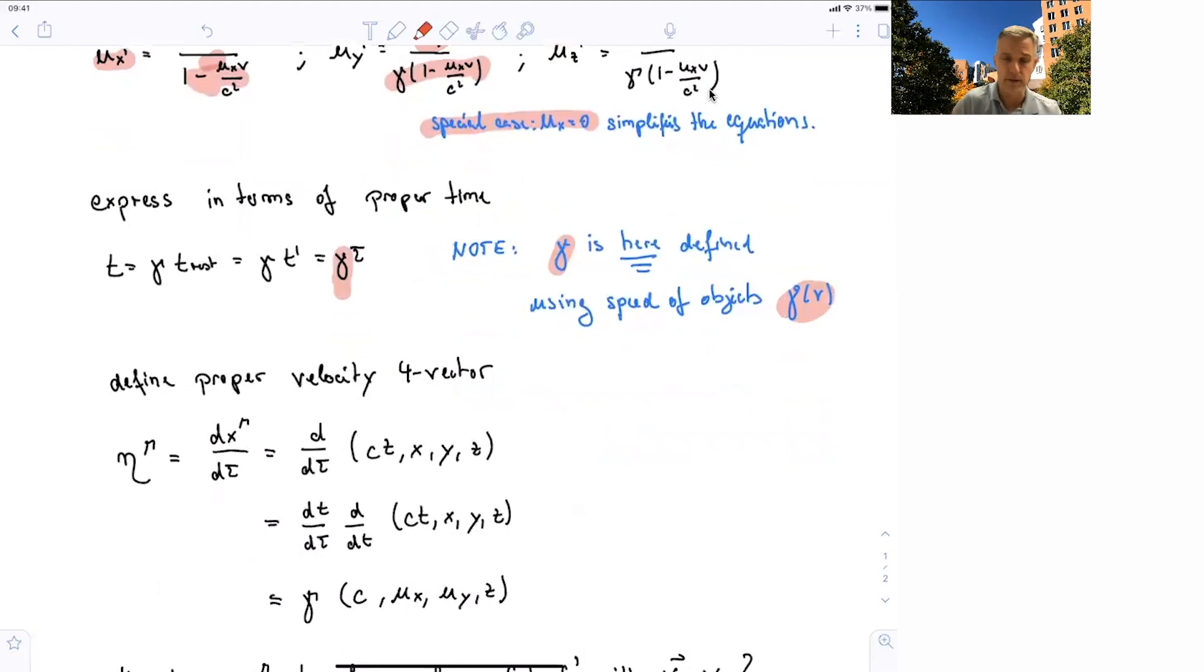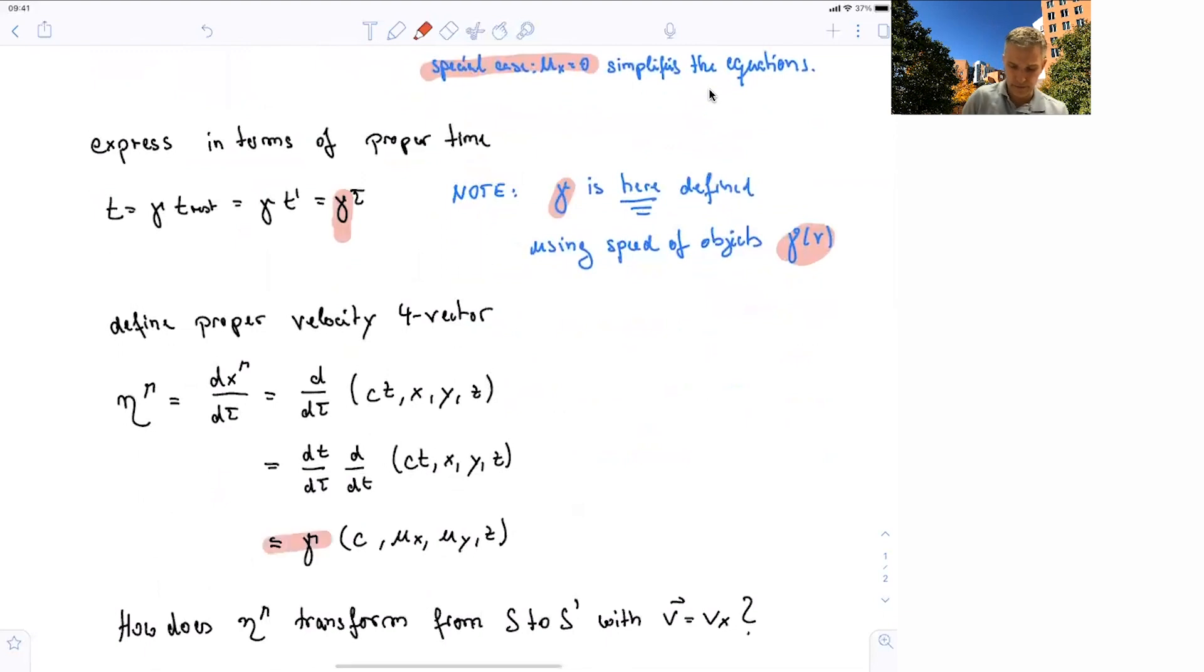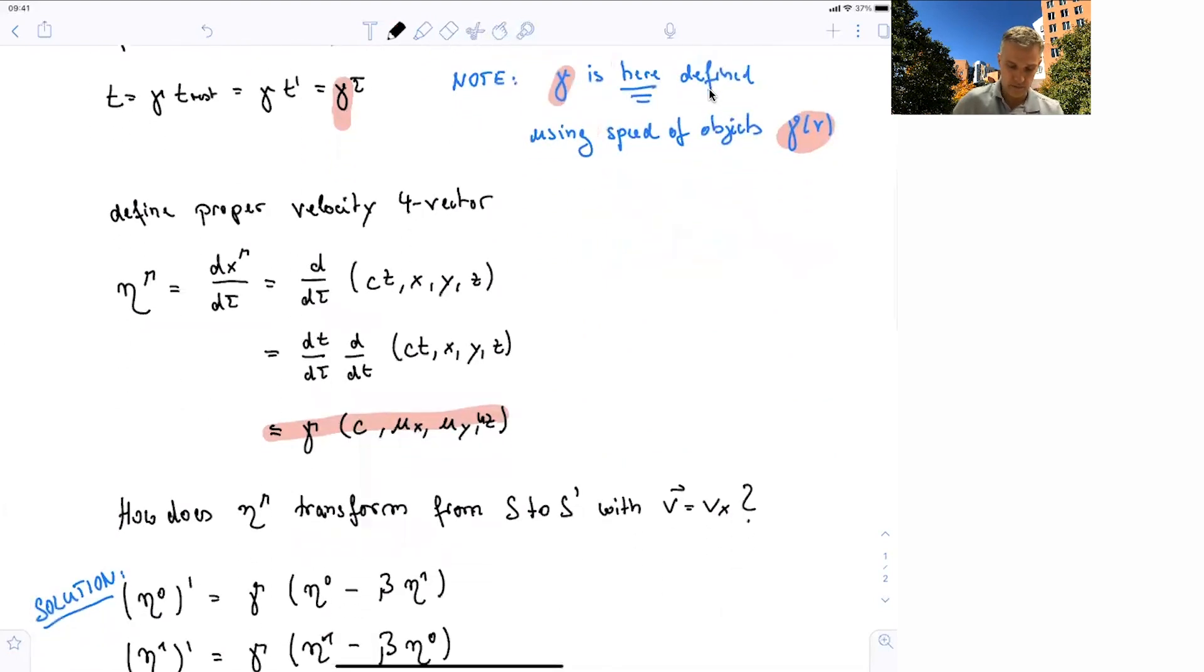I use this vector eta here, which is a four vector, which is the derivative of the spatial component with the proper time. And when we do this, we find this relatively simple solution of gamma times c for the zeroth component, gamma times ux, gamma times uy, and gamma times uz for the last component.